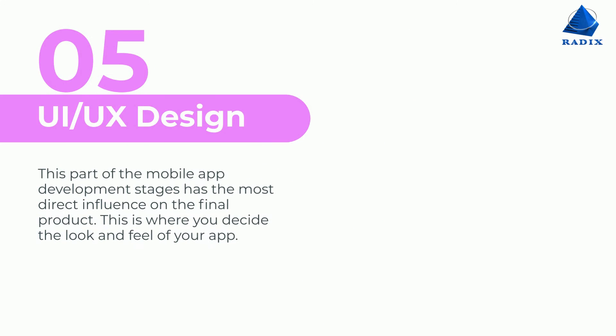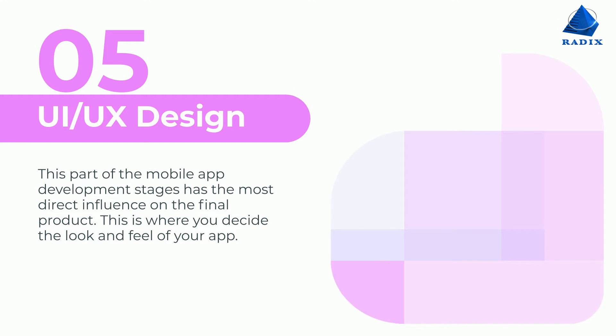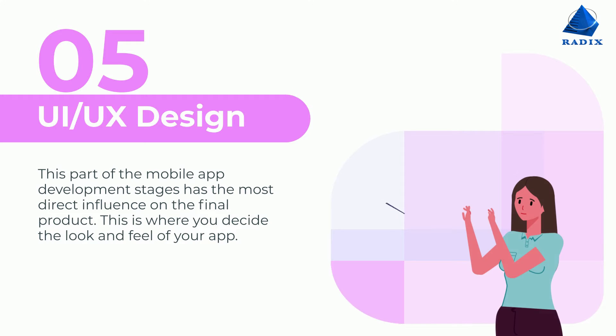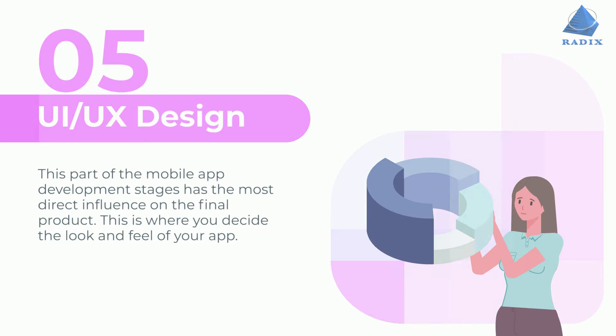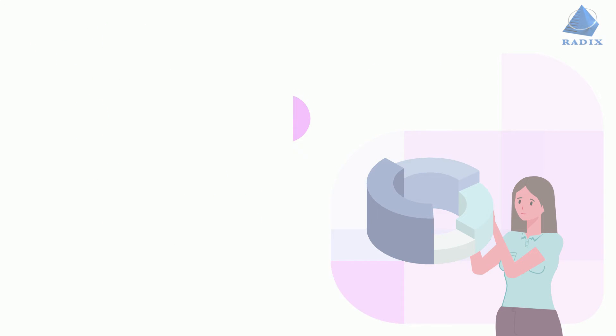Step 5: UI/UX Design. This mobile app development stage has more direct influence on the final product. This is where you decide the look and feel of your app.